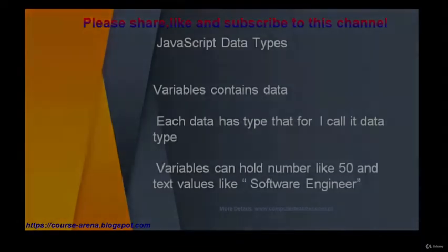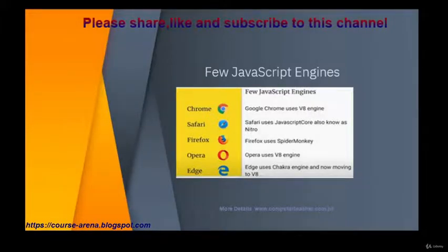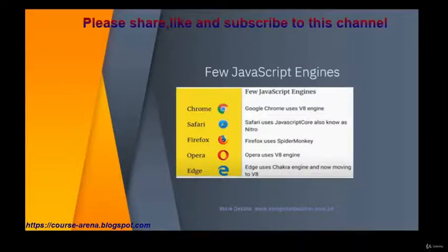Data types: there are many data types; a few of the most popular are functions and objects, number, string, true and false, null, undefined, and symbol — these are the data types of JavaScript. Regarding the JavaScript engine, the most popular browsers use a JavaScript engine. The V8 engine is used in Chrome. Safari has its own engine called Nitro. Firefox has SpiderMonkey. These browsers all have their own JavaScript engines.